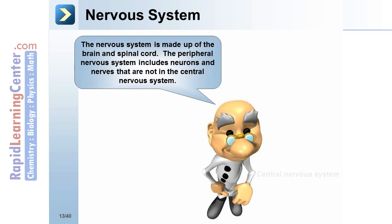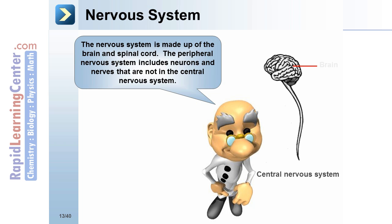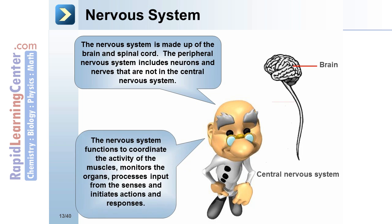Nervous system: made up of the brain and spinal cord. The peripheral nervous system includes neurons and nerves not in the central nervous system. It functions to coordinate the activities of the muscles, monitor the organs, process input from the senses, and initiate actions and responses.